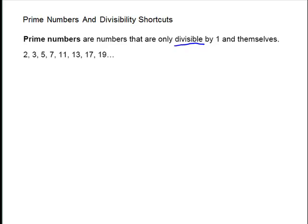So for example, 2. 2 is a prime number. The only numbers that divide into it are 1 and 2. 3 is a prime number. The only things that divide into it are 1 and 3. 5 is a prime number. The only things that divide into it are 1 and 5.